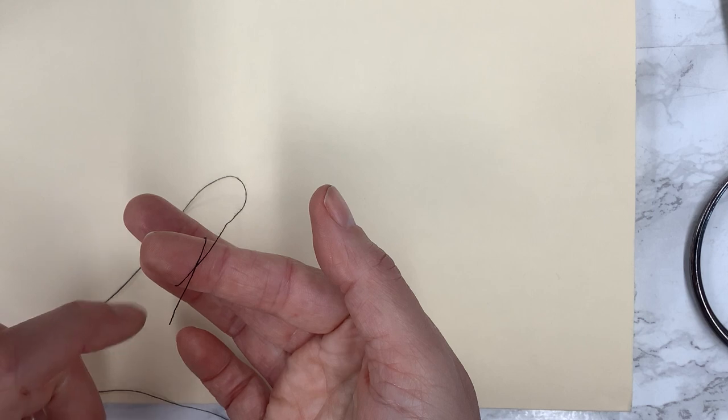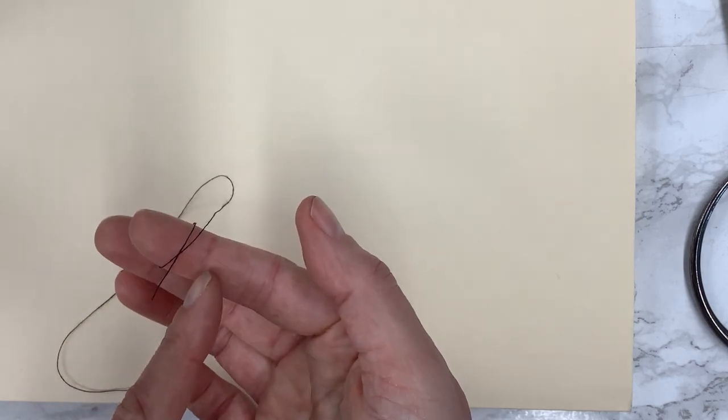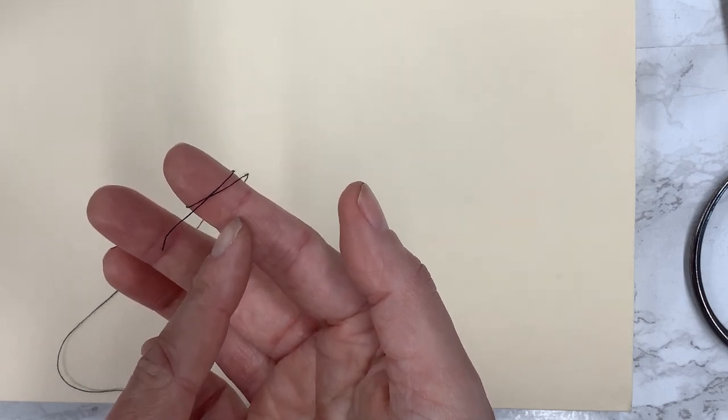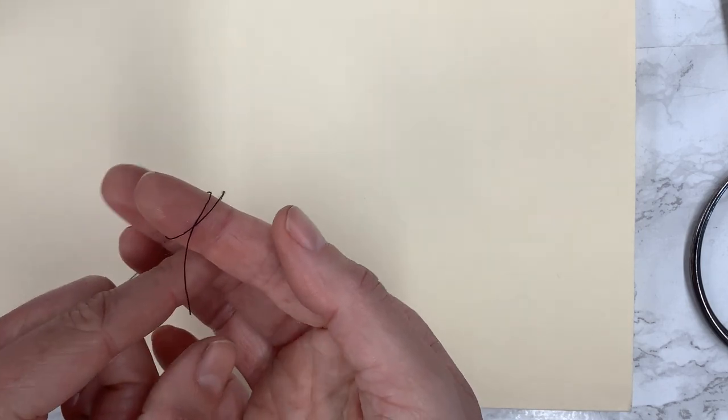You don't need a ton of thread on the other end. And then also notice that it's just above the crease in my finger. You don't want it to be below that because it's going to get stuck here when we start to roll. So our next step is to roll.